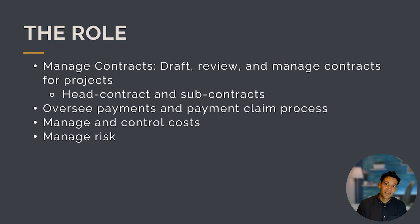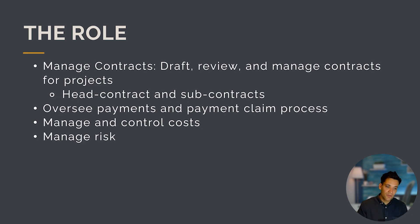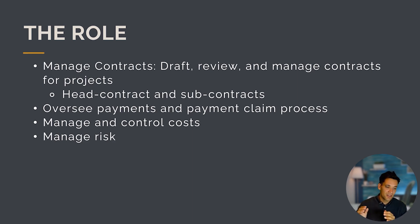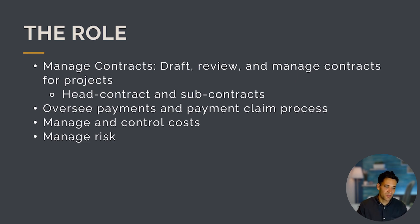So if we summarize this — what does a construction contract administrator need to be able to do? They need to be able to manage contracts: draft, review, and manage both the head contract with the client and subcontracts with the supply chain. They need to oversee payments and the payment claim process, as payment is an essential part of any construction project. Part of this also ties into managing and controlling costs, particularly subcontract costs, and managing risk.